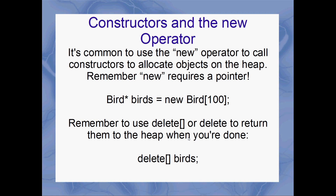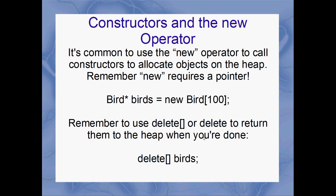You've got to deallocate your RAM. `delete[] birds` because it's an array. If that was just a single bird allocated on the heap, then it would just be `delete` by itself. Whenever you use the new operator, you're in control of deallocating the array — when the function ends, this array is not going to fall out of scope by itself, so you have to call delete yourself.